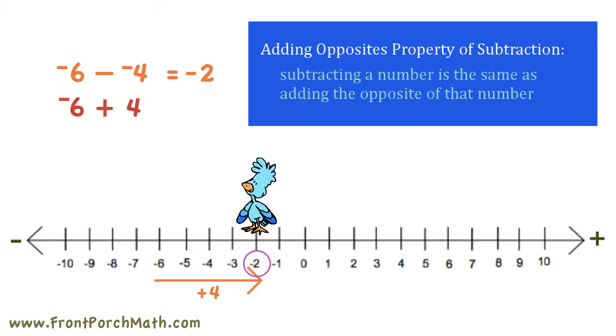And using our adding integer rules, we know that negative 6 plus 4 is negative 2. In both cases, we ended up with the answer negative 2, which is good, otherwise the property didn't work.